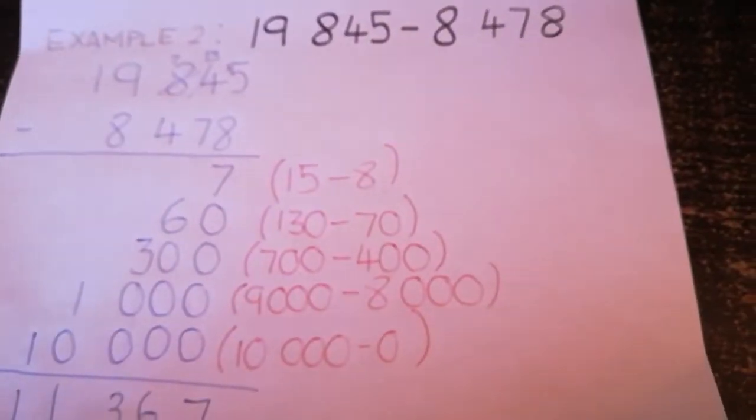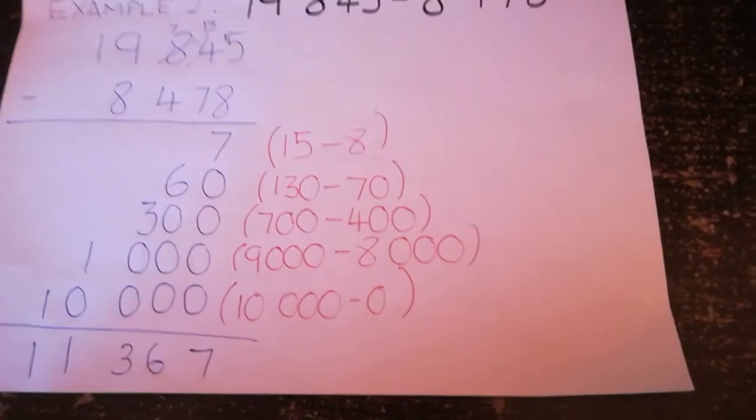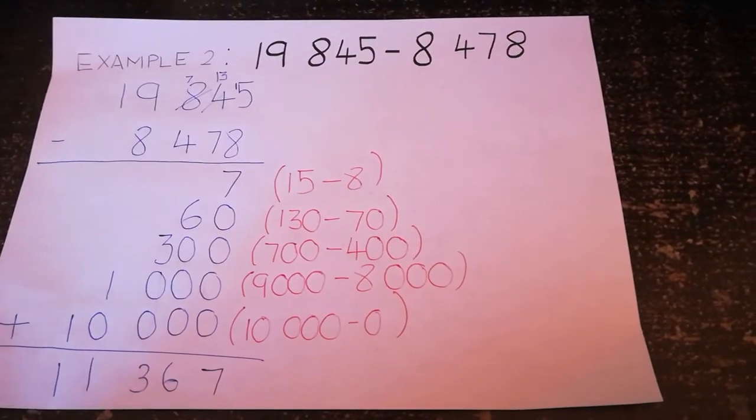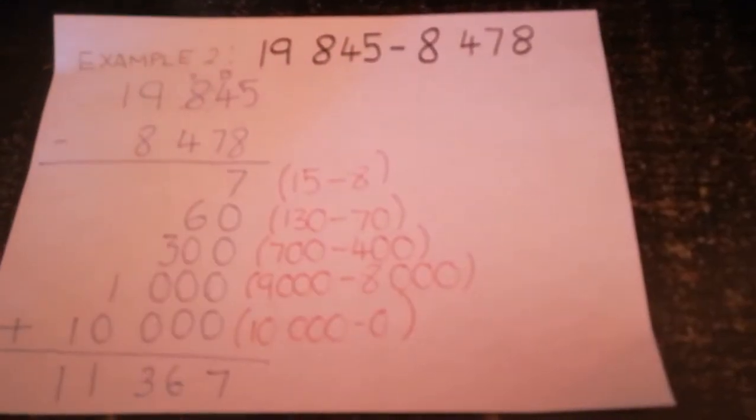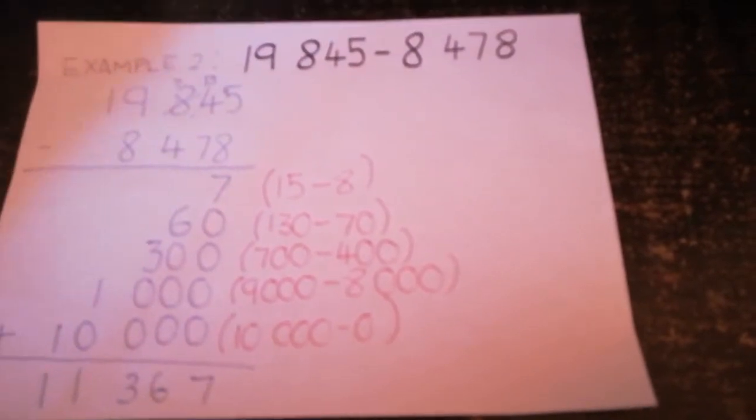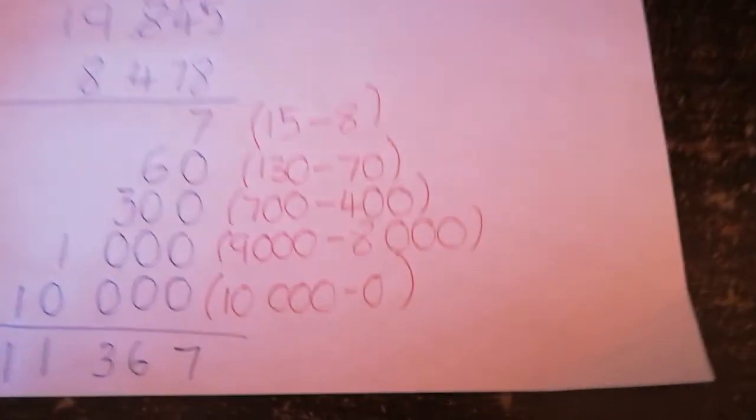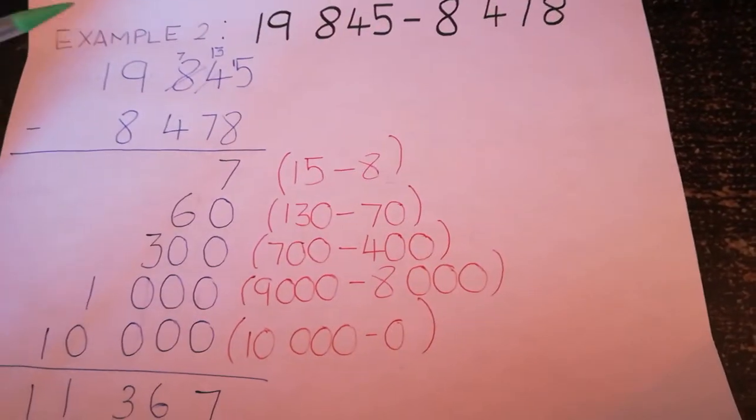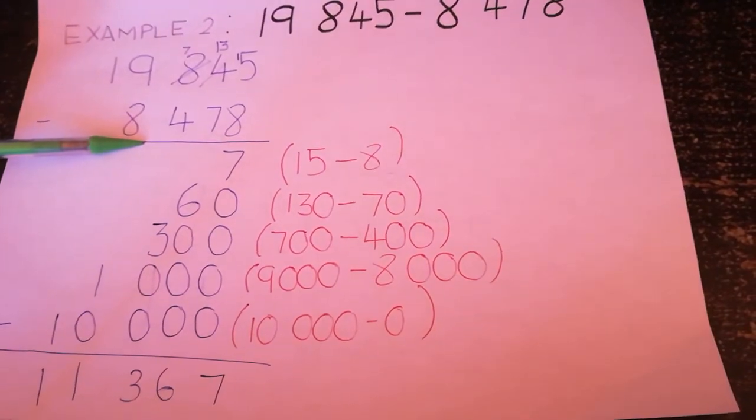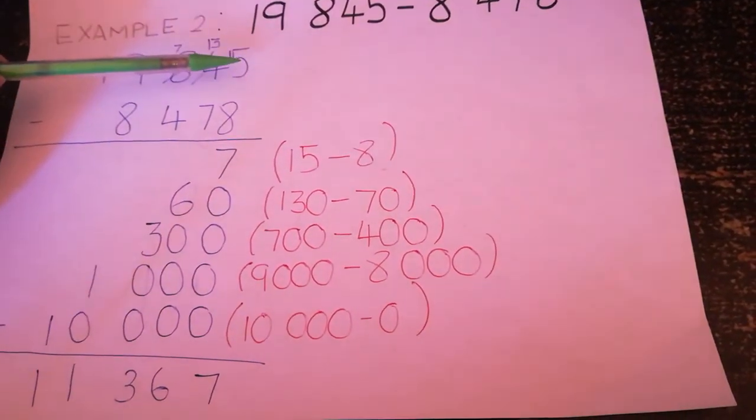Let's move on. That was the first method. Now we are going to look at the second method. I prefer this method because it prevents any confusion, and also we are used to column method, and this is similar to column method. We are just going to put the numbers here, like in column method, and we are going to subtract.